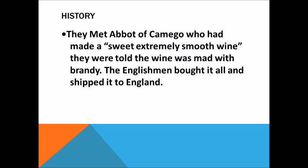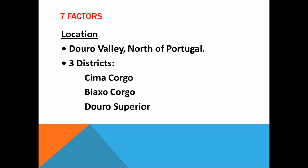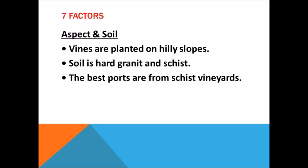Roero DOCG: red wine made from Nebbiolo grape — 95 to 98% — and 2 to 5% Arneis. Roero Arneis: white wine made from the Arneis grape — crisp, floral, with apricot, pears, and almonds.